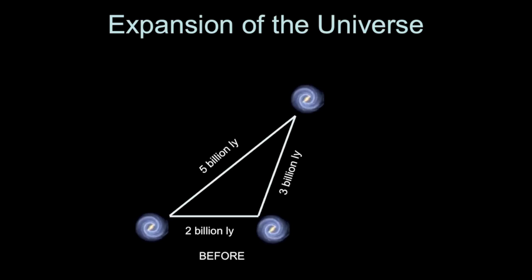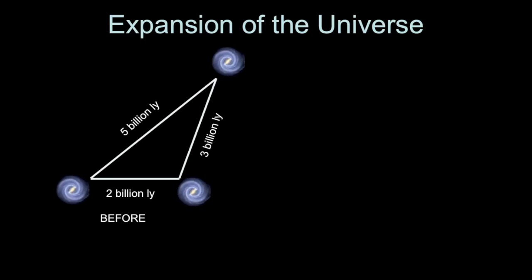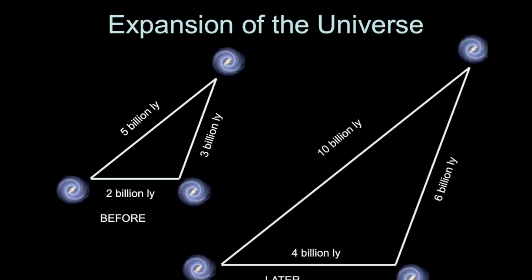An aspect of expansion is that it is proportional everywhere, so that as the universe expands every distance expands by the same amount. The expansion rate is the same everywhere at a given moment in time. So if we start with galaxies separated by distances of 2, 3, and 5 billion light years, and the universe expands by 2 times, then all those distances become 4, 6, and 10 billion light years.